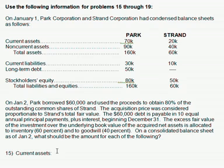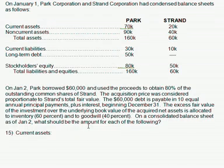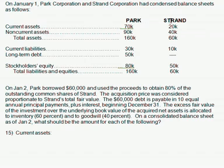To find the consolidated current assets, all you gotta do is take a look up here. Current assets of Park: $70,000, and Strand, the subsidiary: $20,000. Just add those together — not much to do about it. $70,000 plus $20,000.